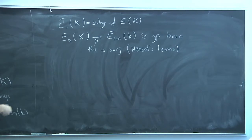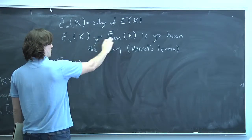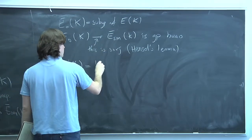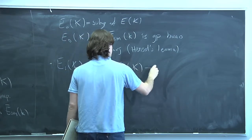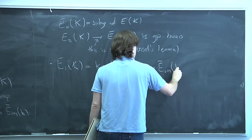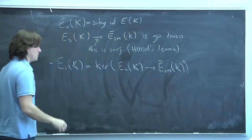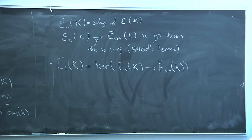Finally, we're going to define E₁ to be the kernel of this map. So we've started to break up the K-points of E into two different pieces, which we can try to understand separately.